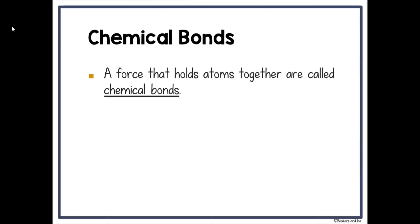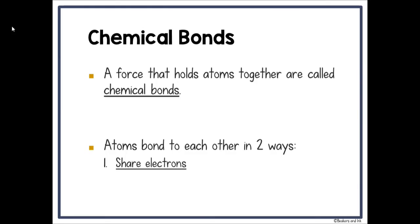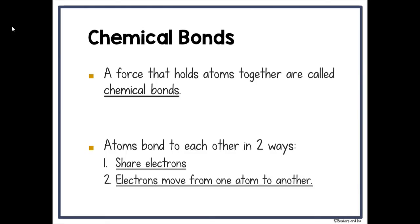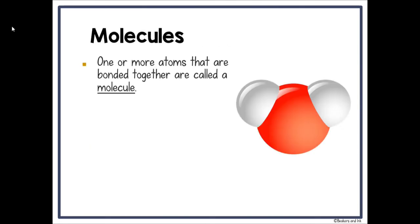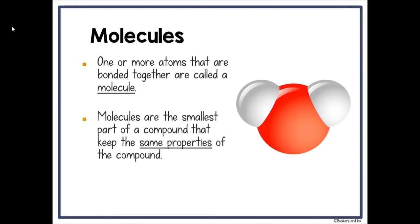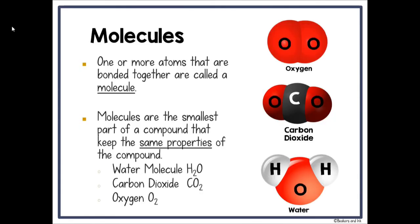A force that holds atoms together is called a chemical bond. Atoms bond each other in two ways: by sharing electrons, and when electrons move from one atom to another. One or more atoms that are bonded together are called a molecule. Molecules are the smallest part of a compound and keep the same properties of the compound. Examples include H2O (water), CO2 (carbon dioxide), and O2 — oxygen, which is an element but also a molecule since two atoms are bonded together.